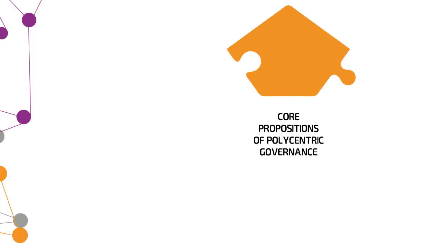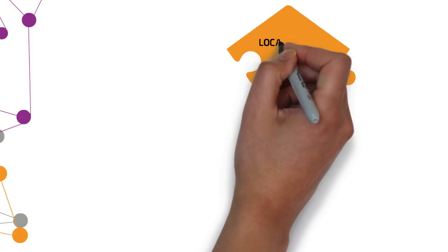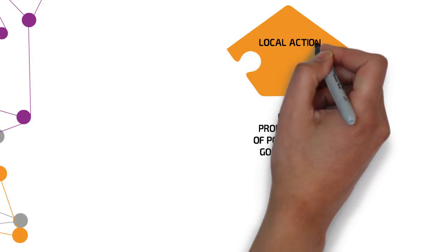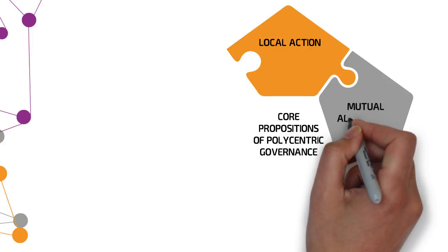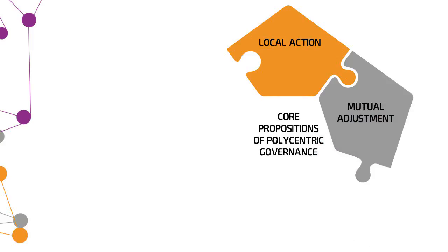Firstly, the emergence of governance initiatives at a local level through processes of self-organisation. Secondly, mutual adjustment between constituent units of a governance system, which spontaneously interact with one another.